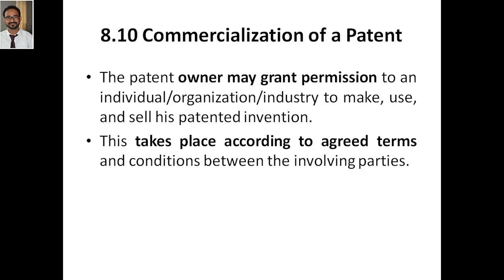The patent owner may grant permission to any individual person or maybe the entire organization or industry. Usually, if it has industrial value or industrial application, then it will be the industry to make, use and sell his patent invention. This is what commercialization of the patent is — you are giving permission to someone that they can use your patent, maybe for making that product, manufacturing that product, then use it or sell it.